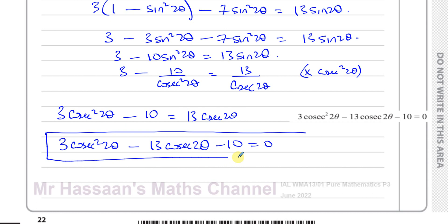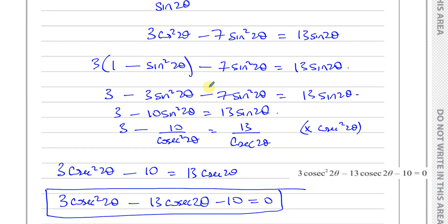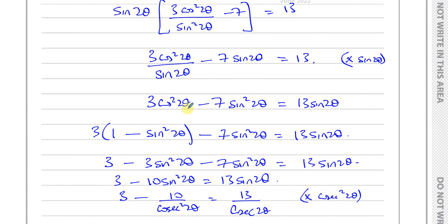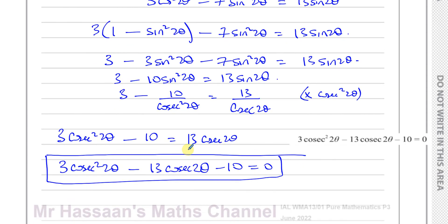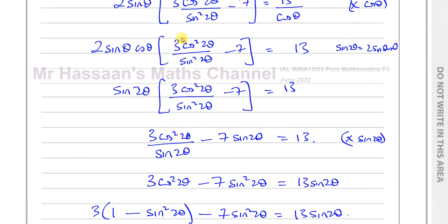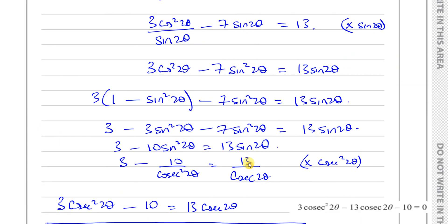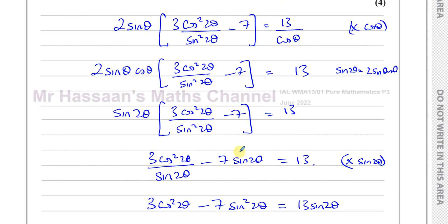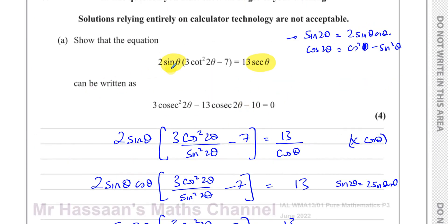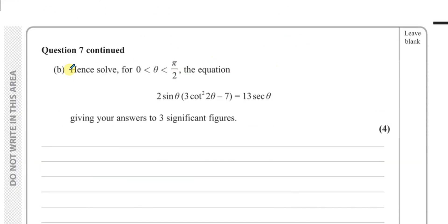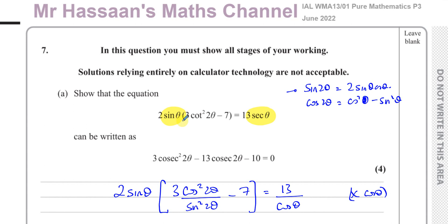That's what we had to show, and you must present your steps clearly. There are likely other valid approaches. Importantly, if you couldn't complete part A, note that part B uses part A's result — so you can still attempt part B using the shown equation.